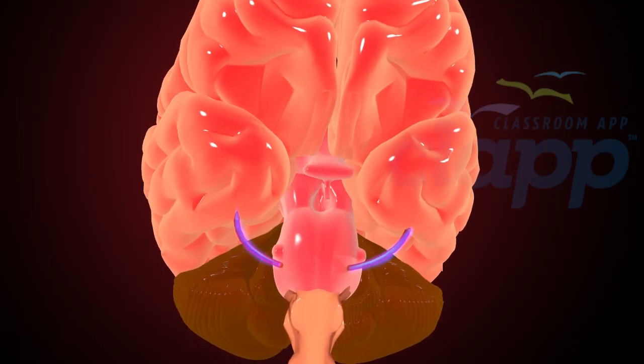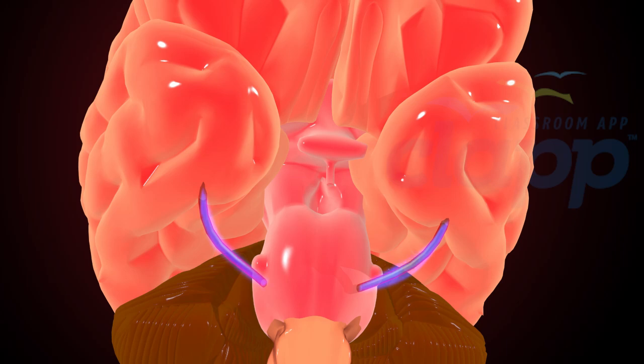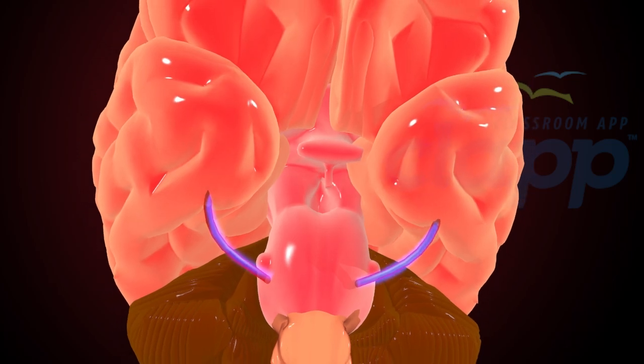One of the primary abnormalities in PCOS is the abnormal release of GnRH. Instead of being released in a regular cyclic manner, for an unknown reason, it is released at a higher pulse frequency.